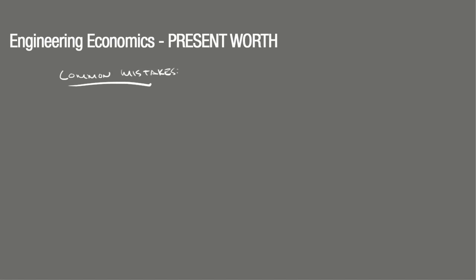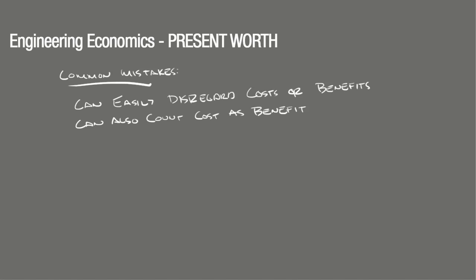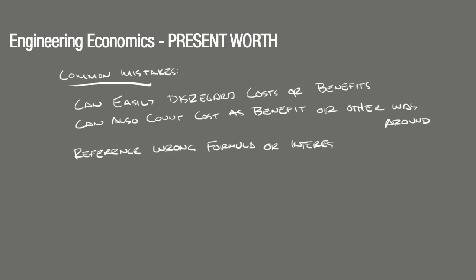Here are a couple of ways we can mess up on a problem like this. When economic problems get more involved, we can encounter multiple costs and benefits, making it easy to disregard or not account for one of the variables, causing our analysis to conclude wrong. We could also easily count a cost as a benefit or vice versa if we aren't careful. Another common mistake: when pressed for time, we could reference the wrong formula or compound interest table. Make sure to check the 'converts' column to ensure the correct formula, and verify the title of the compound interest table as a safety check.